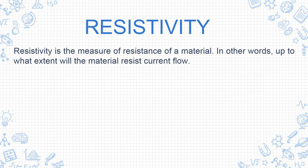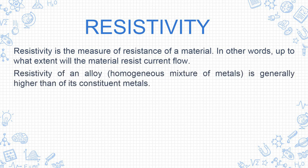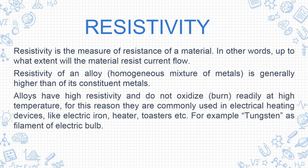Resistance is the property which opposes the flow of electrons or current. Resistivity is the measure of resistance of the material — it indicates to what extent a material will resist current flow. The resistivity of an alloy is generally higher than that of its constituent metals.